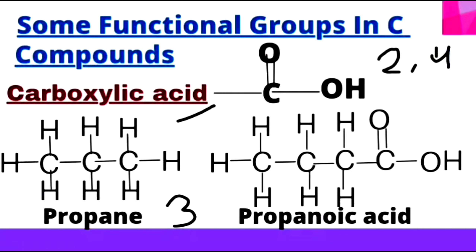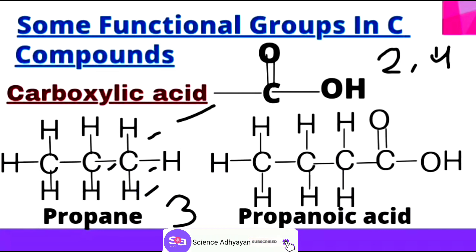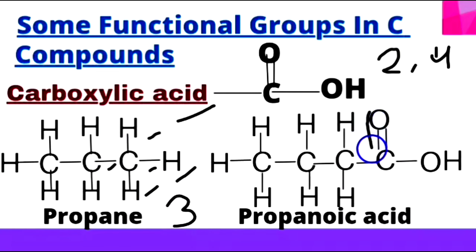We see that carbon is covalently bonded to 4 atoms — one carbon and three hydrogens. The functional group removes one hydrogen atom from the chain and attaches the carboxylic acid group in its place. The new compound formed is called propanoic acid. The naming follows IUPAC rules, which we will study in the next video.